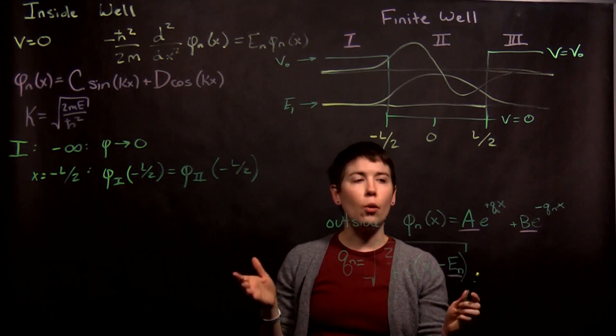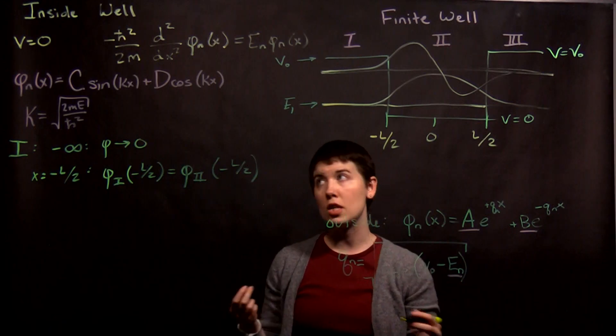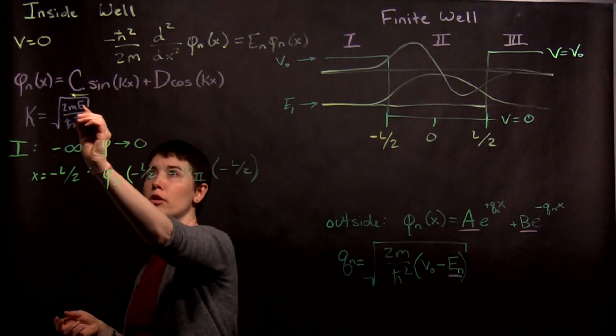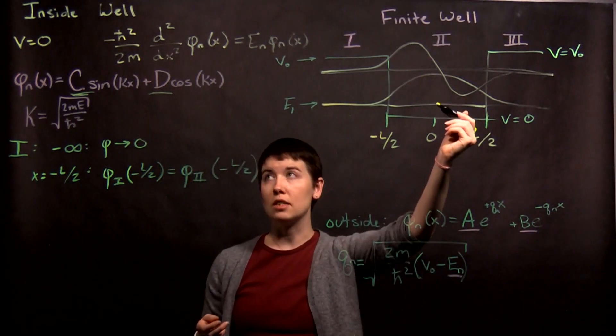And we didn't know what their coefficients were up front. So this a and b, we don't know what that is for a given energy eigenstate. We have other coefficients. I use different letters to make it clear that they're different for what's happening on the inside.